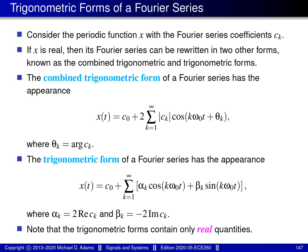I'd like to comment on two other forms in which a Fourier series can be expressed in the case of a real-valued function. Consider a periodic function X with Fourier series coefficient sequence C that is real valued. Using the fact that the coefficient sequence must be conjugate symmetric, we can re-express the Fourier series in two other forms: the combined trigonometric form and the trigonometric form. The combined trigonometric form has the general highlighted form, where theta_K is given by a particular formula.